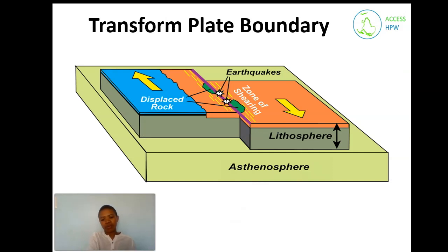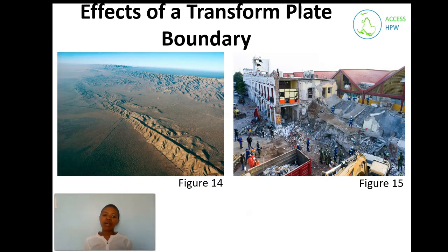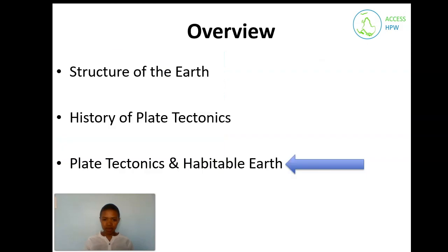The third type is transform plate boundary — when plates slide past each other. As a result, faults are formed, as shown in figure fourteen, because the earth's crust gets deformed. Figure fifteen shows a building destroyed by earthquakes. Shallow earthquakes are a result of transform plate boundaries.